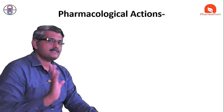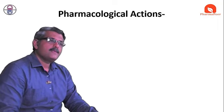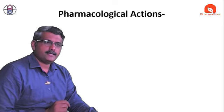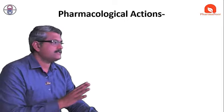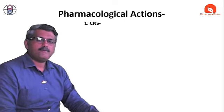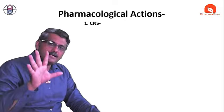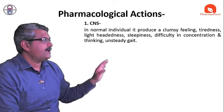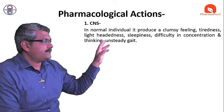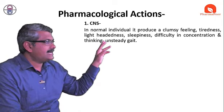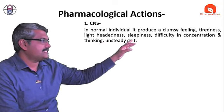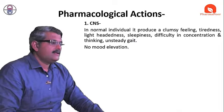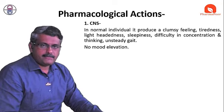This increased availability of dopamine and serotonin decreases the effects of depression and shifts the patient toward the normal phase. When tricyclic antidepressants are administered, they produce pharmacological actions. Looking at the central nervous system effects: in normal individuals, TCAs produce a clumpy feeling, tiredness, light headache or sleeplessness, difficulty in concentration and thinking, and unsteady gait.